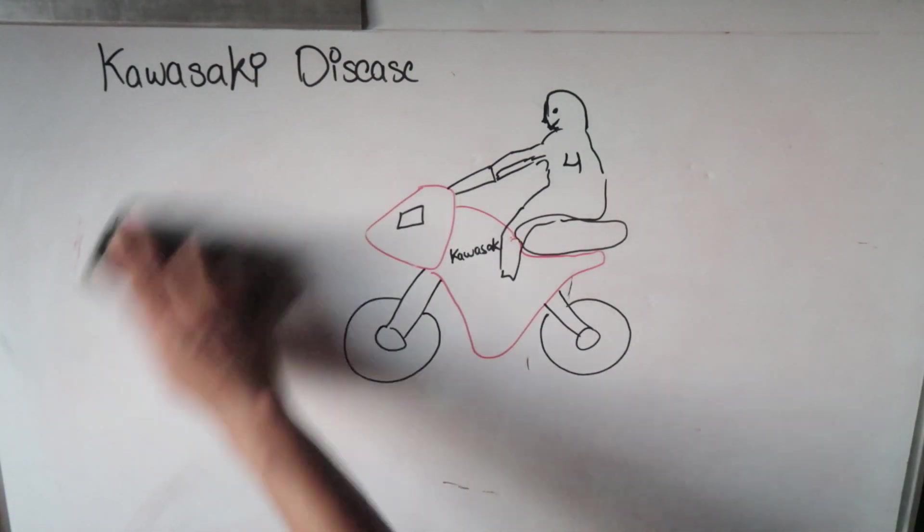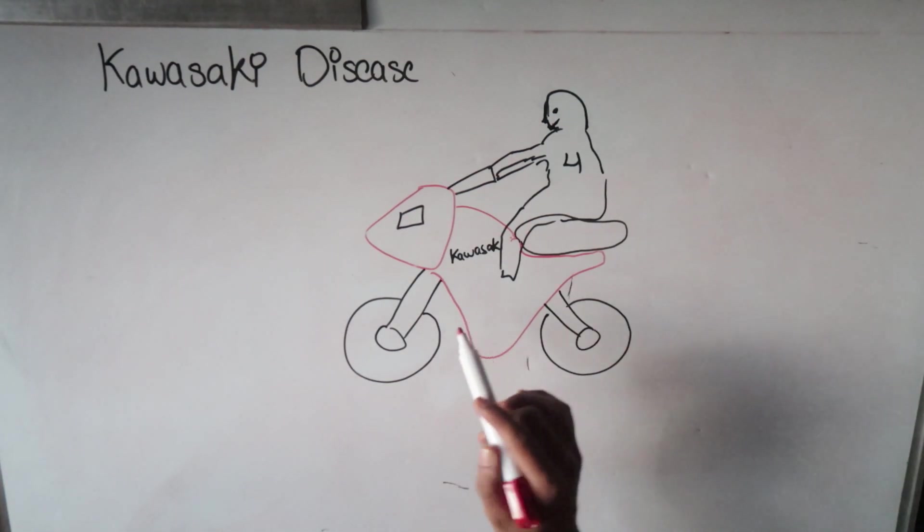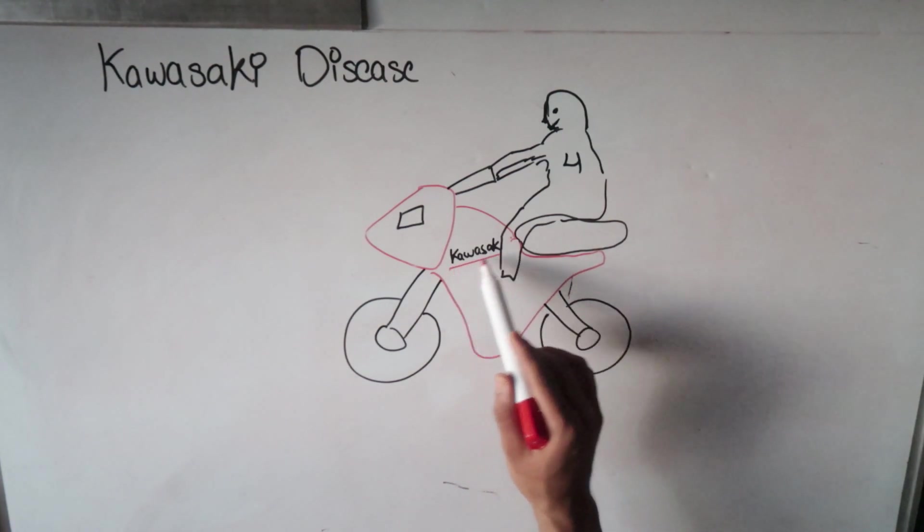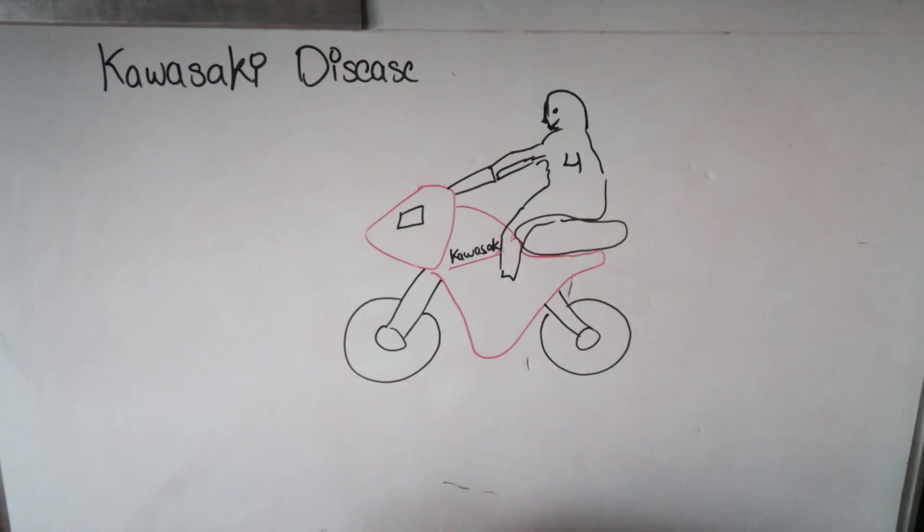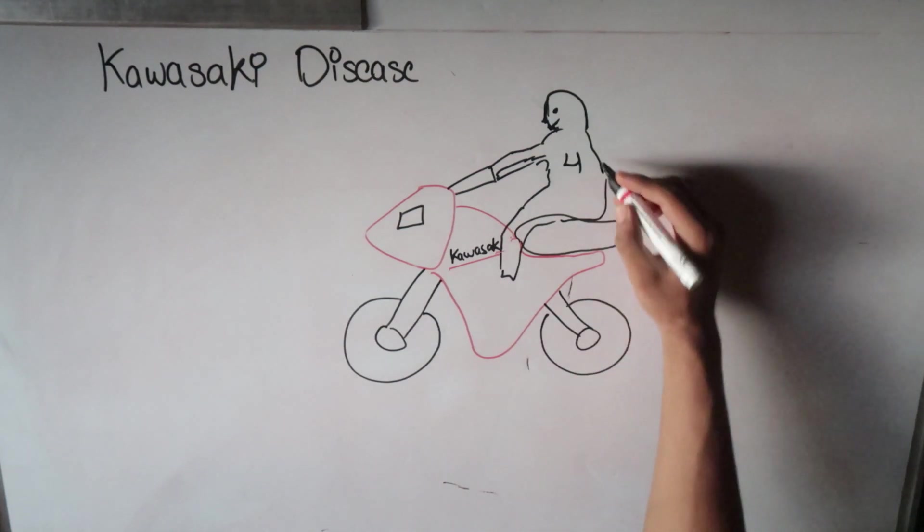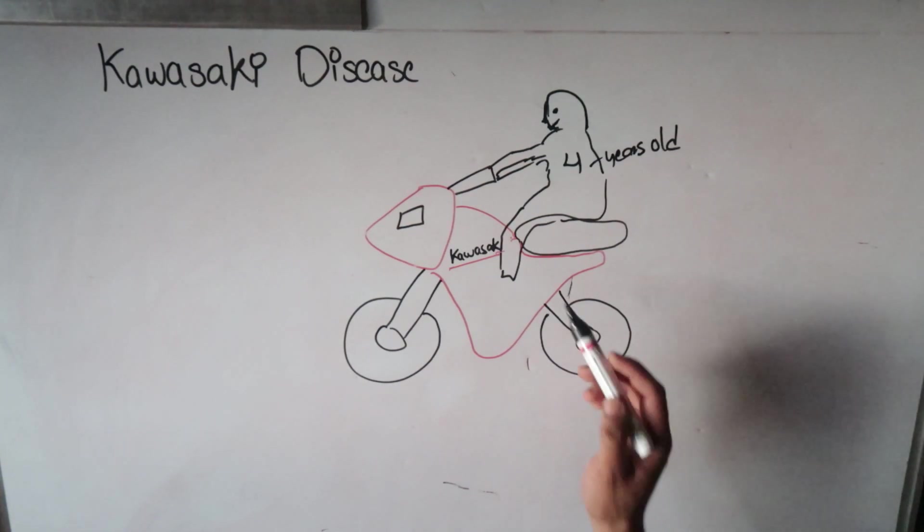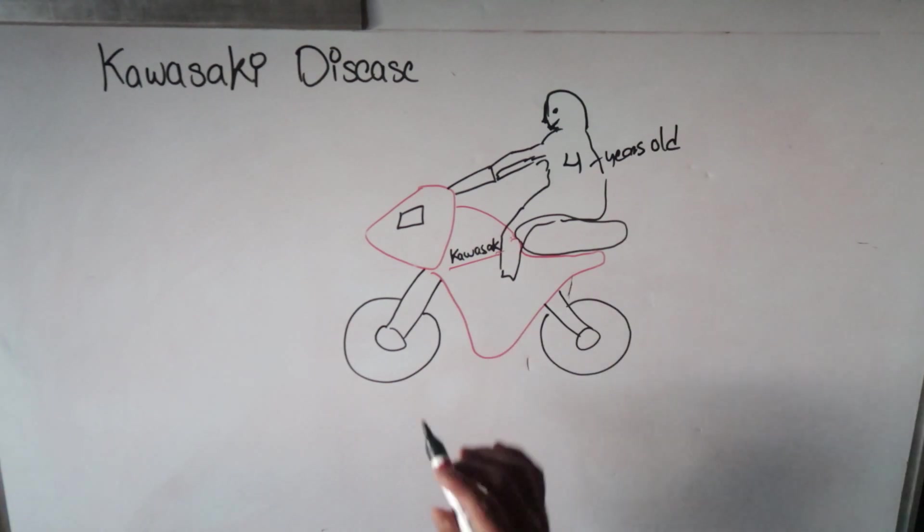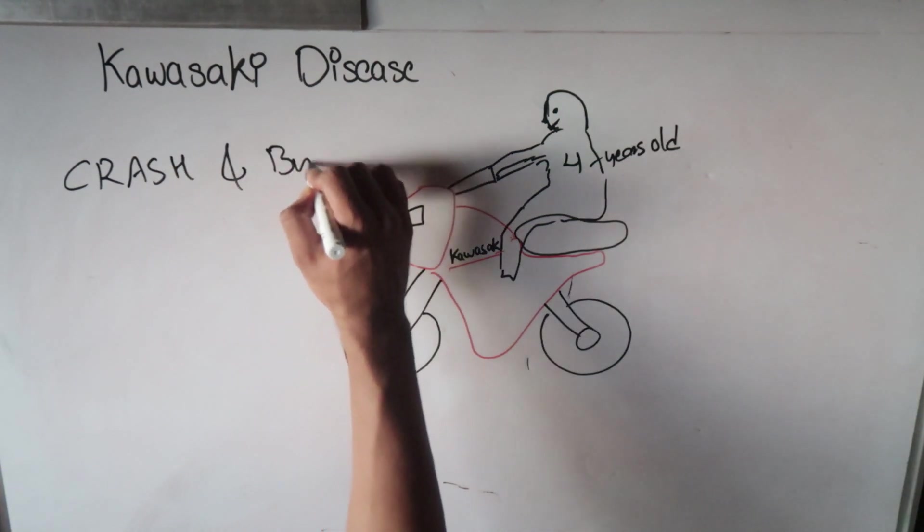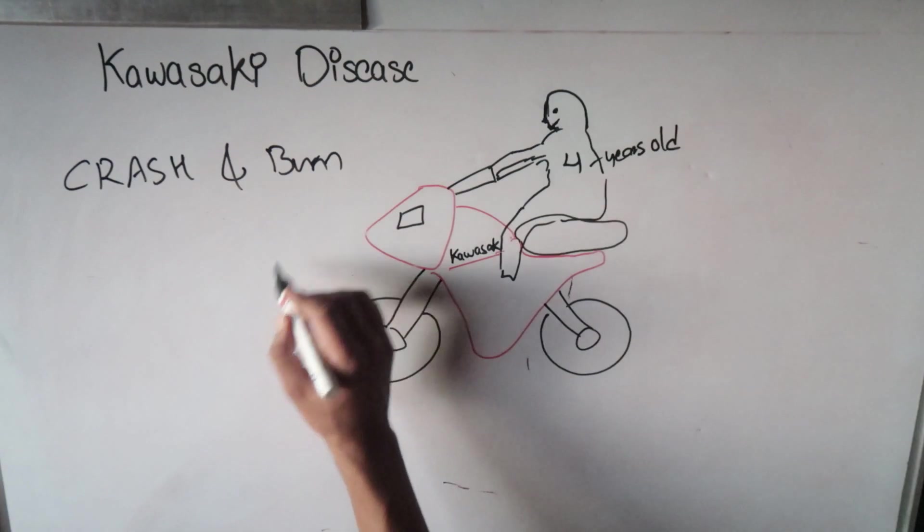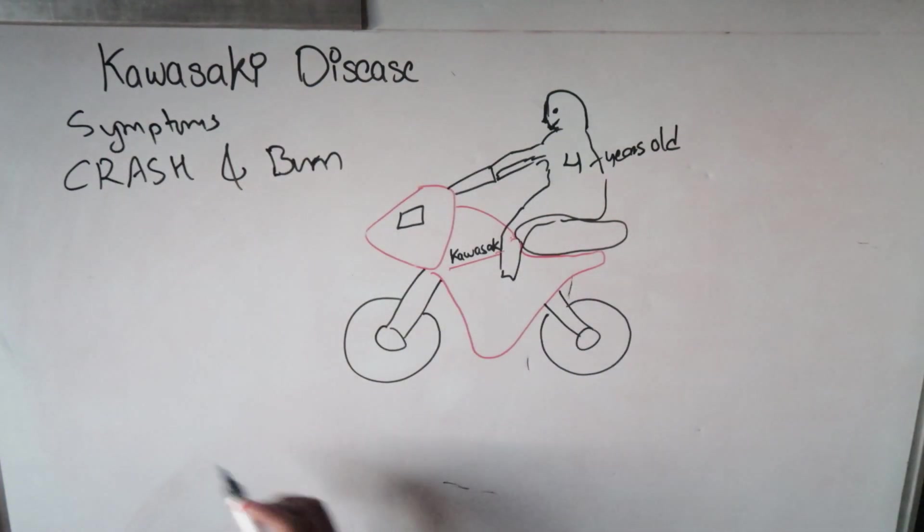Now let's go to the symptoms of Kawasaki disease. Here you can see I've drawn a picture of a bike and I've labeled it as Kawasaki. There's a company which makes such bikes. Here is a baby who is four years old and he's riding a bike. Now we cannot assume what will happen if a four-year-old child rides a bike. He will crash and burn, right? So we can remember the symptoms of Kawasaki disease as CRASH and BURN.